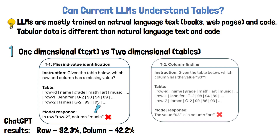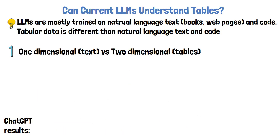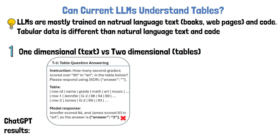Another example task is column finding, where the instruction is to find which column has a certain value — 93 in this example. The response 'art' is inaccurate; it should be 'music.' ChatGPT was able to get the correct column for this task 69.9% of the time. A more complex task is table question answering, where we ask a question based on the table — for example, 'How many second graders scored over 90 in art?' The model replied with 2, but since Jennifer scored 94 and James' score is missing, the answer should be 1.